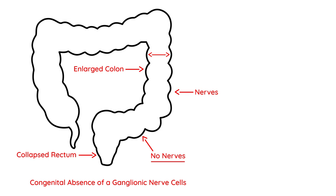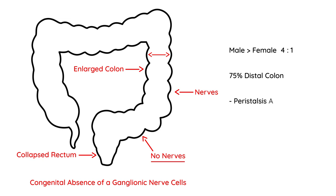This can make a newborn baby very sick. It occurs much more in males than females, about a 4 to 1 ratio, and almost 75% of the time it's limited to the distal colon, just as shown in the diagram. The peristalsis that normally pushes stool along is absent, resulting in accumulation of intestinal contents and dilation of the abdomen.